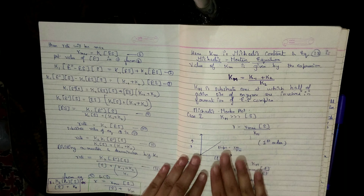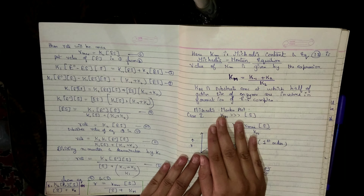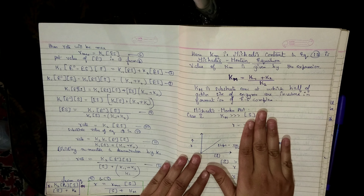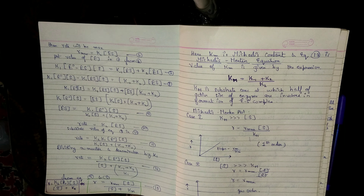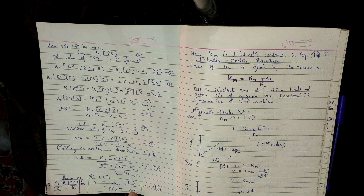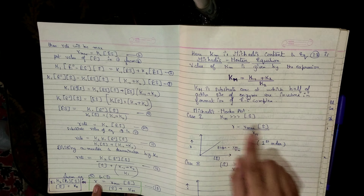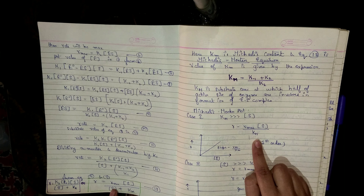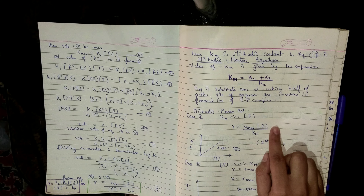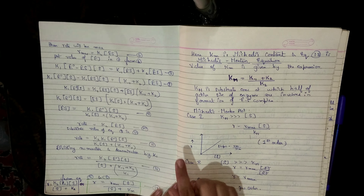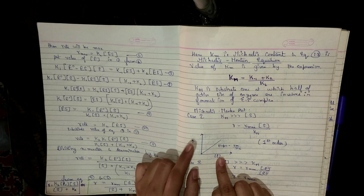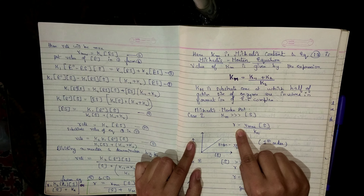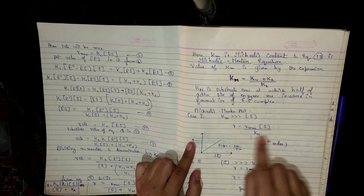Case 1: when KM is much greater than [S] (substrate concentration is very low), [S] is negligible compared to KM and can be ignored in the denominator. The equation simplifies to r = Rmax·[S] / KM. Plotting rate vs. substrate concentration gives a straight line with slope Rmax/KM — this represents first-order kinetics.